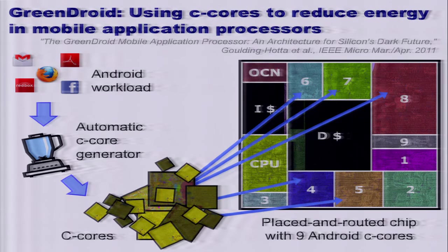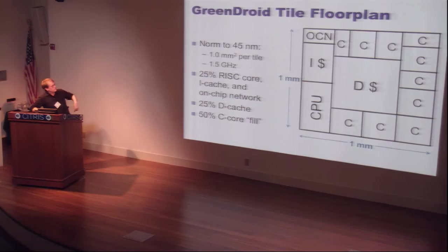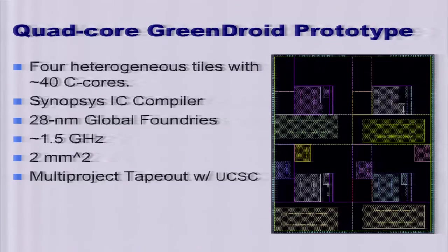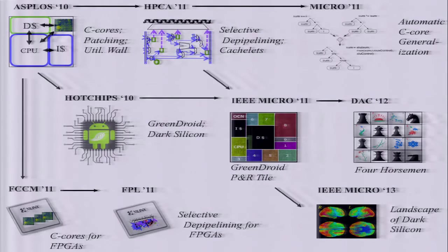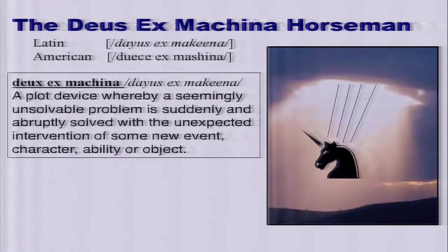We've been applying the conservation core technique to the Android mobile environment, extracting hotspots from Android and building a chip. The floorplan — the output of a layout tool — shows nine different conservation cores clustered around a data cache with a processor on the left. We have a standard template and have been targeting GlobalFoundries and their 28nm process, and we're working on taping this out. There are a bunch of papers you can check out on this.